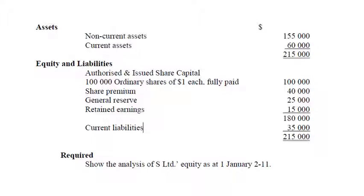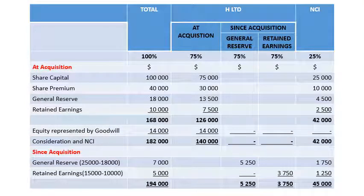We are required to show the analysis of equity of S Limited on 1 January 2011. In our analysis, the share capital is $100,000, share premium is $40,000, and the general reserve on the date of acquisition was $18,000 — note we take $18,000, not the $25,000 from the statement of financial position. The retained earnings on the acquisition date was $10,000, not $15,000. The total is $168,000; H Limited's 75% share is $126,000, and NCI at 25% is $42,000.